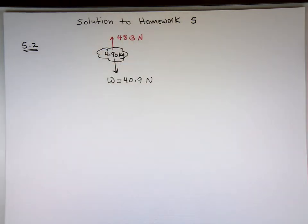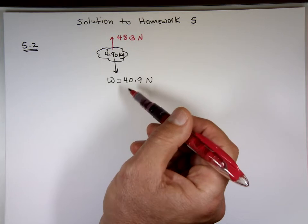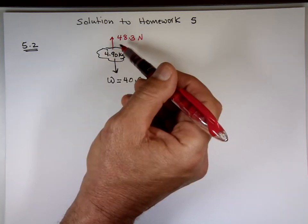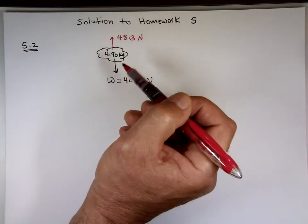What is the acceleration? Now, notice we have two forces. The weight is a force, and the astronaut pulling the rock upward is another force. We have 40.9 down, that's really a negative, and that's a positive. Up is positive, down is negative.